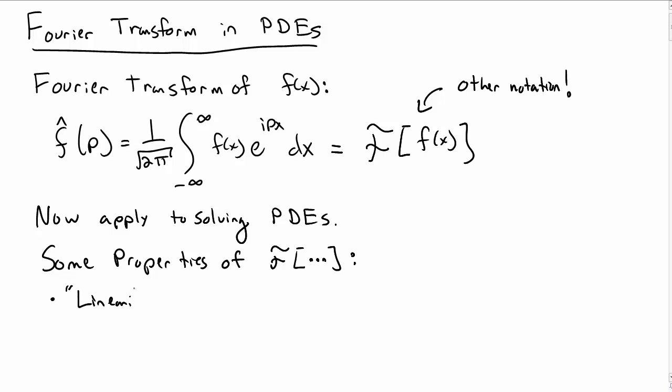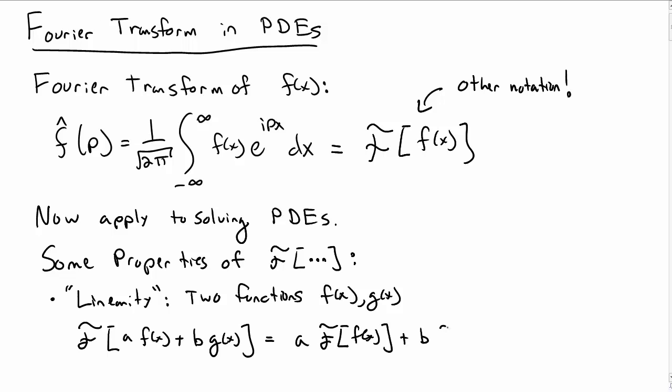One of the properties is linearity, and linearity means if you have two functions, say f of x and g of x, then you can take the Fourier transform of the linear sum of them, a f of x plus b g of x, and the Fourier transform is just the sum of the Fourier transforms. So the a comes out of the Fourier transform of f of x plus b Fourier transform of g of x.